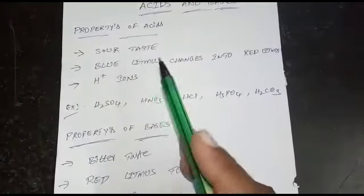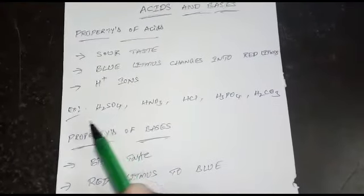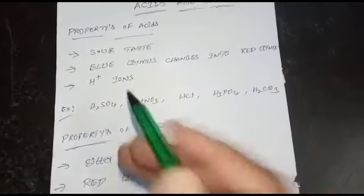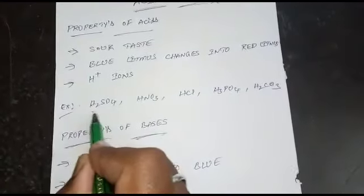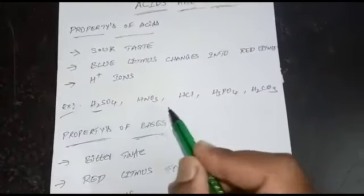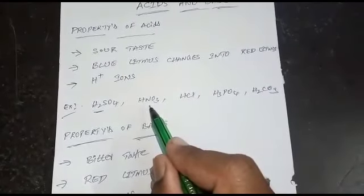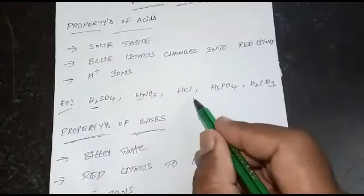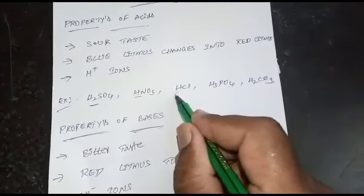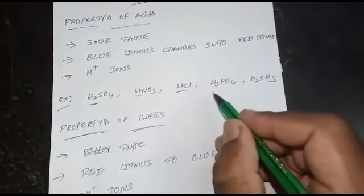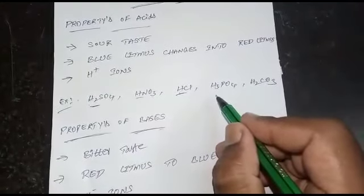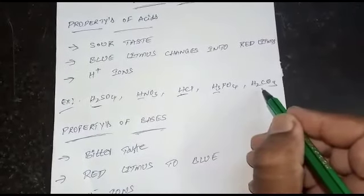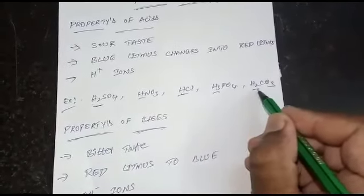Every acid contains hydrogen ions. For examples: H₂SO₄ — sulfuric acid; HNO₃ — nitric acid; HCl — hydrochloric acid; H₃PO₄ — phosphoric acid; H₂CO₃ — carbonic acid. All of these contain hydrogen ions.